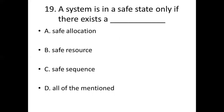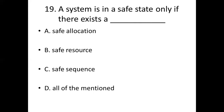Nineteenth bit. A system is in a safe state only if there exists a dash. Option A: Safe allocation. Option B: Safe resource. Option C: Safe sequencing. Answer: Option C, Safe sequencing.